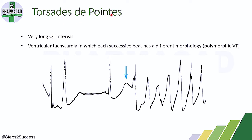The next type is torsades de pointes. Here there is a very long QT interval — the time from Q to T is prolonged. Another key feature is that each successive beat has a different morphology, unlike monomorphic ventricular tachycardia where all beats are uniform. Because each beat looks different, this condition is also known as polymorphic ventricular tachycardia.